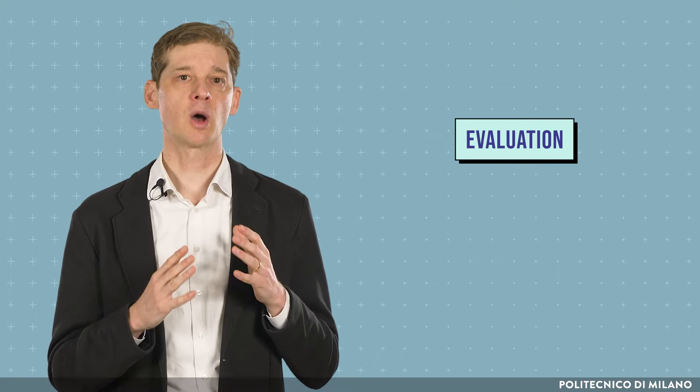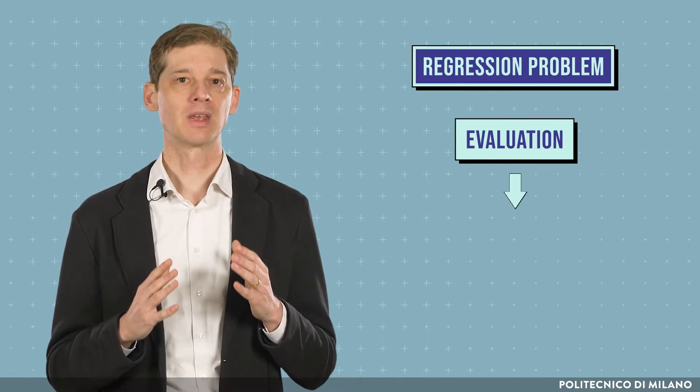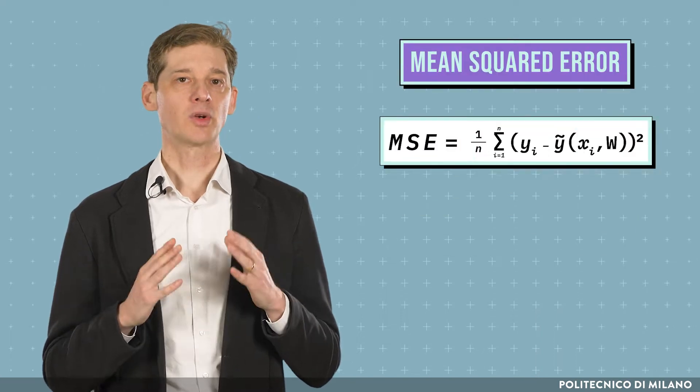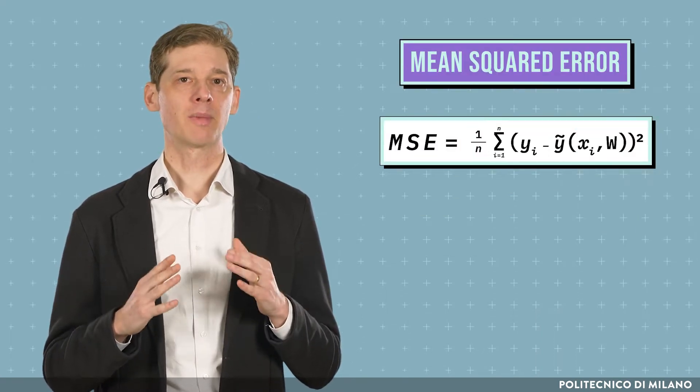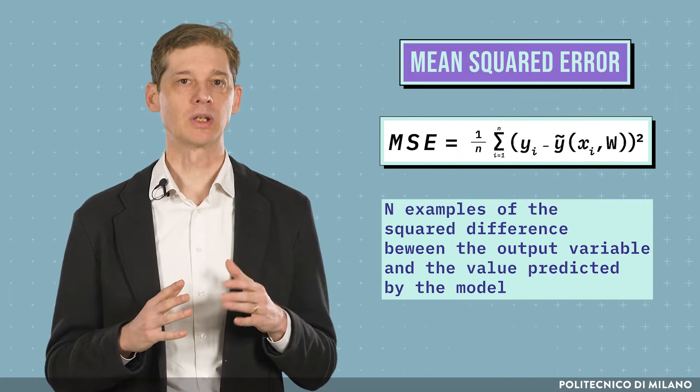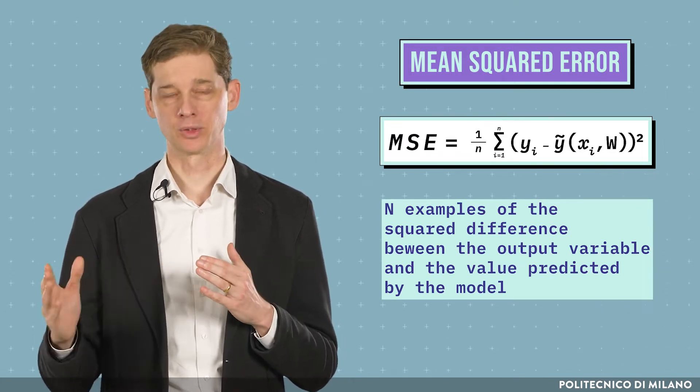As for the evaluation, the most common loss function for regression problems is the mean square error. The mean square error of a model is calculated by averaging over a set of n examples the squared difference between the output variable and the value predicted by the model.